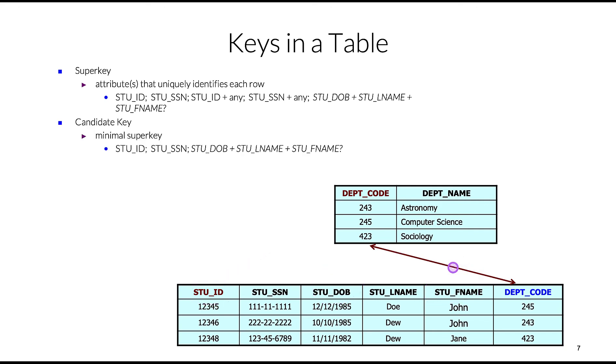Candidate keys are minimal super keys. From all possible attributes identifying each row uniquely, we should select a minimal super key, perhaps student ID or social security number. So our primary key in this case will be student ID.